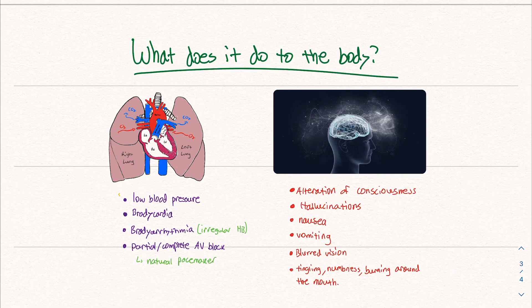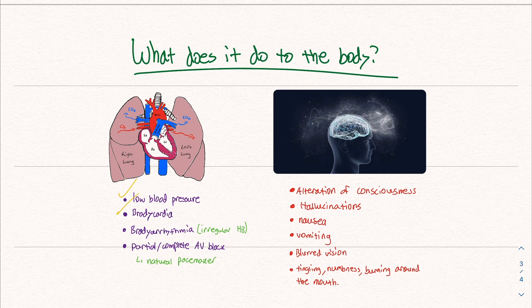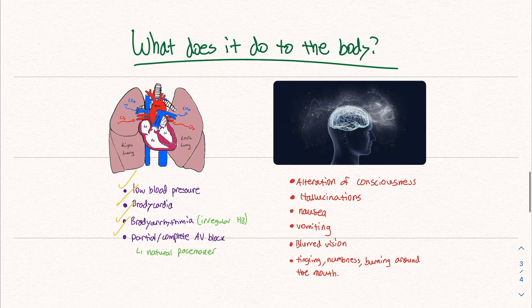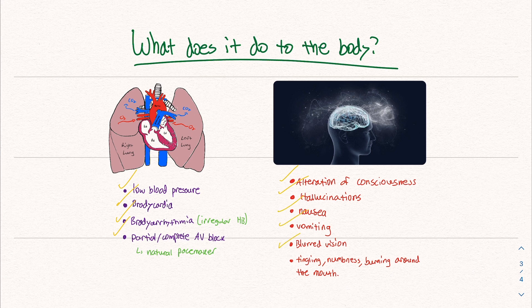These symptoms include things like low blood pressure, bradycardia, which is a slower heart rate, bradyarrhythmia, which is an irregular heartbeat or potential or complete AV block. The AV node is basically the natural pacemaker to the heart. Outside of that, you can also expect things like alterations of consciousness, hallucinations, nausea, vomiting, blurred vision, tingling, numbness and burning around the mouth and a bunch of other things. As I mentioned in the first slide, this depends on how much honey you consume. In general, when you consume it, it definitely makes you feel a little different, which is why I wanted to talk about it.